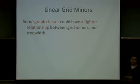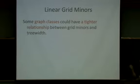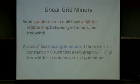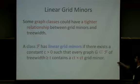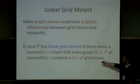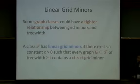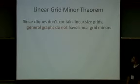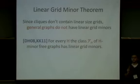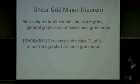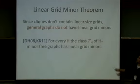For some classes of graphs — given that this is a graph class workshop after all — you can have a much tighter relationship between the grid minor and the tree width. We will say that a class F has linear grid minors if there exists some constant C such that if I have a graph in the class and the tree width is at least T, then it contains a C·T × C·T grid minor. Since cliques don't contain linear-sized grids, general graphs don't have linear grid minors. However, for H-minor-free graphs — if we fix some graph H and consider H-minor-free graphs — then the class of graphs that exclude H actually does have linear grid minors.